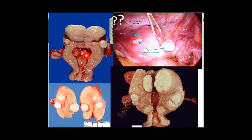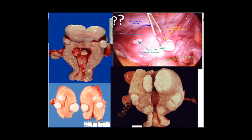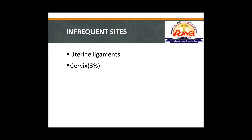In the longitudinal section images, we can see different types: submucosal fibroids, subserosal fibroids visible on the uterine surface on laparoscopy, and intramural fibroids within the myometrium. These images help appreciate the various anatomical locations of fibroids.